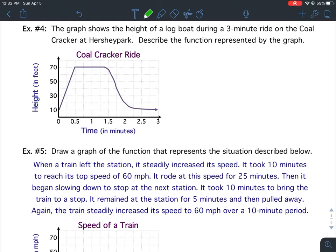Describing Functional Relationships from Graphs, Example Number 4. The graph shows the height of a log boat during a three-minute ride on the Coal Cracker at Hershey Park. Describe the function represented by the graph.